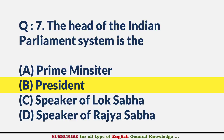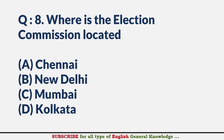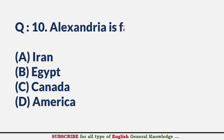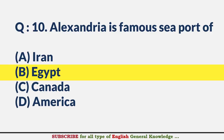Where is the Election Commission located? — Answer B: New Delhi. Who hoists the flag on Independence Day at Delhi Fort? — Answer C: Prime Minister. Alexandria is a famous seaport of? — Answer B: Egypt.